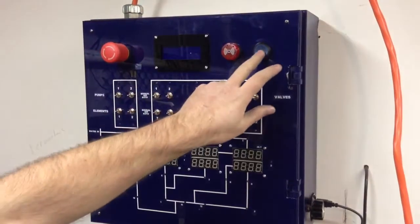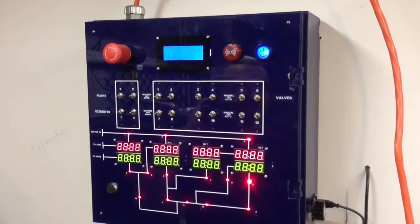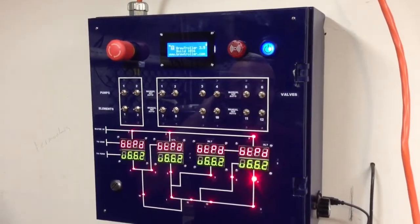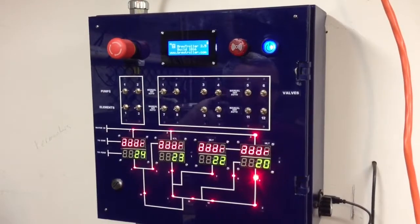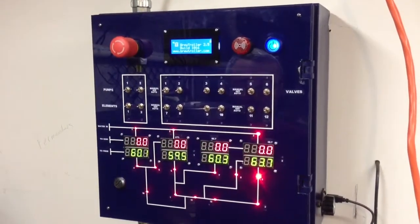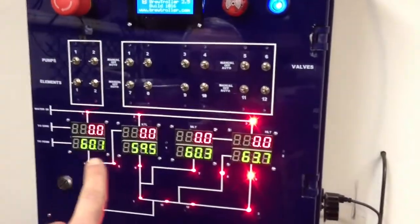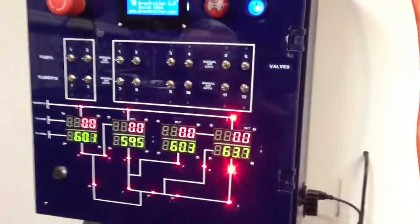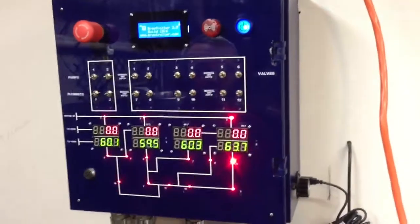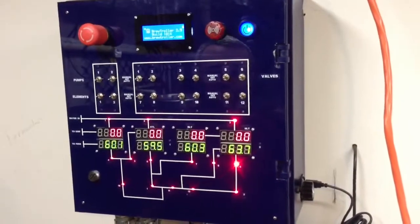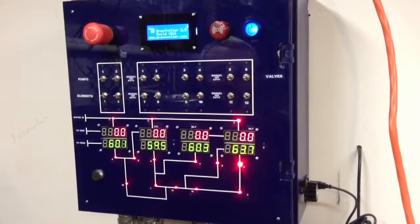So here we go, quick little boot up. Now the PIDs at the bottom, you can see the PIDs down here, these are the thermocouples that are hooked up to the kegs, the boil kettle, the mash tun, the hot liquor tank, and then our chiller.